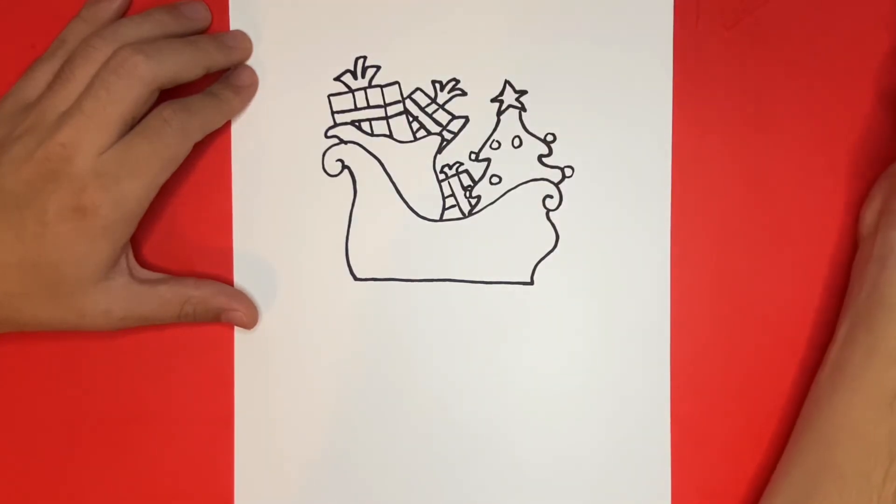Now we're almost done but we're not done just yet. We still have to draw the bottom portion of the sleigh. For the first step we're going to draw a long line going across from left to right.